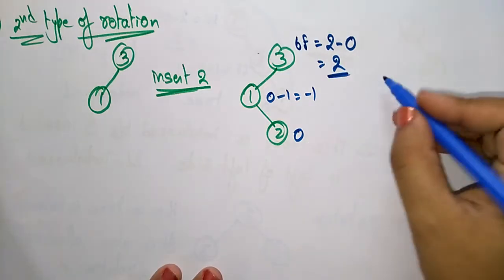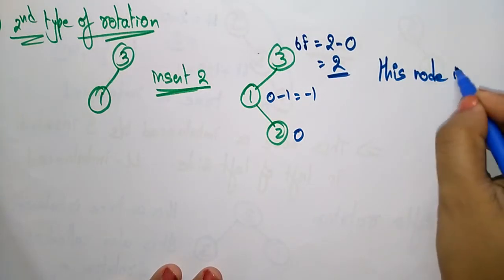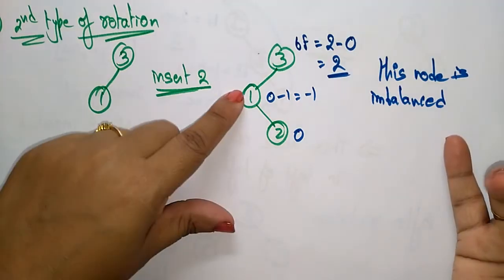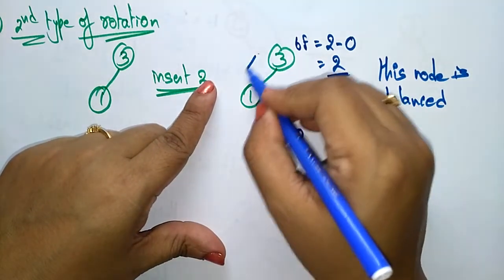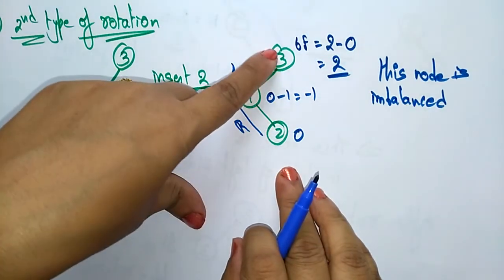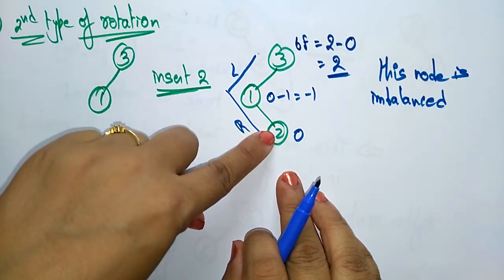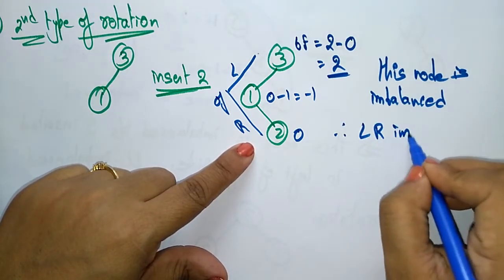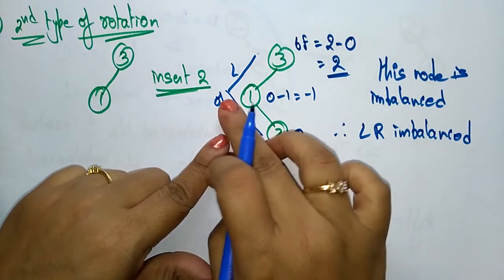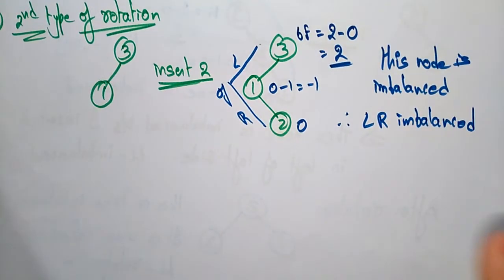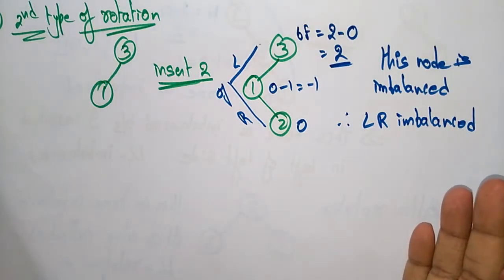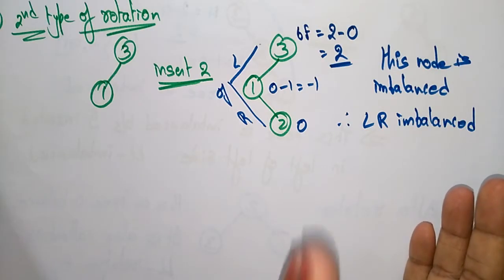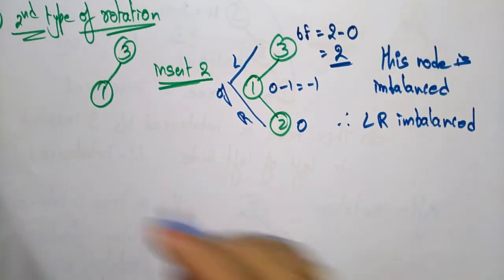The two lower nodes are within the balanced factor range, but the root node is not — it is imbalanced. This is because we inserted the element to the left of right, so we call this a left-right imbalanced tree. To fix this we have to perform rotations until the tree reaches a balanced state.